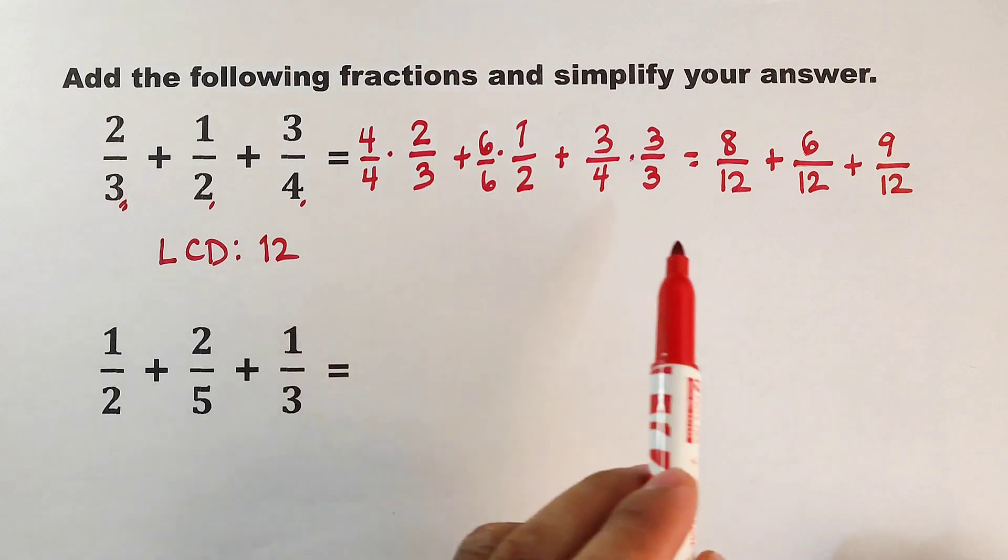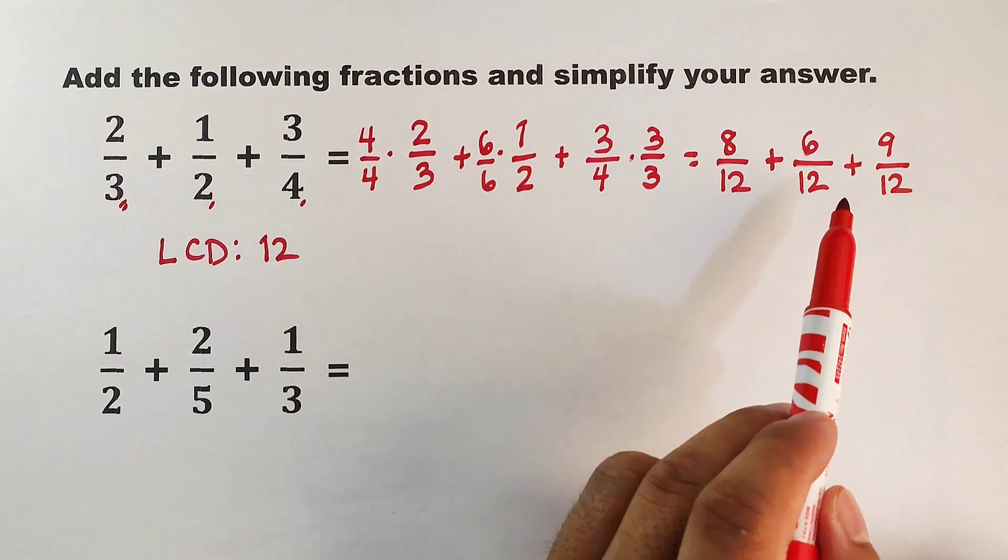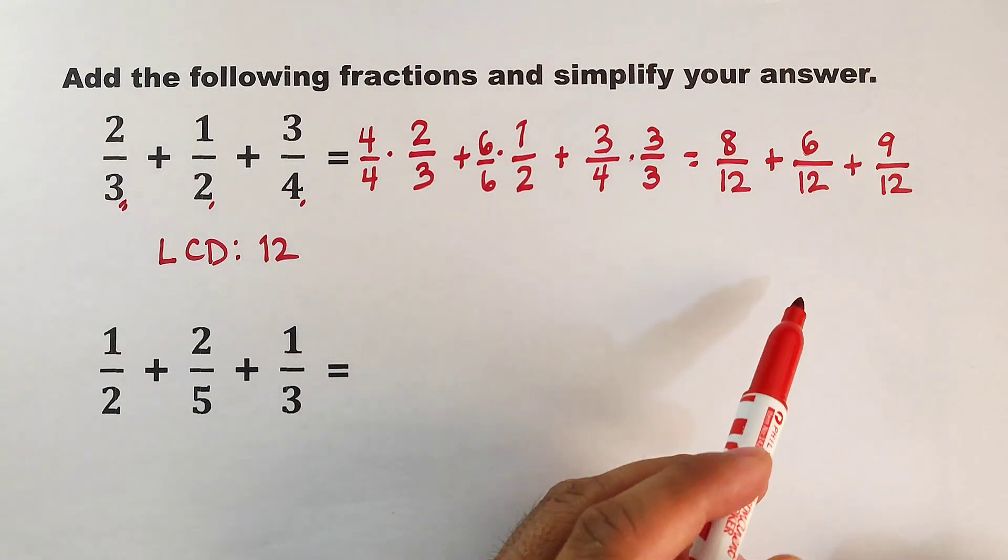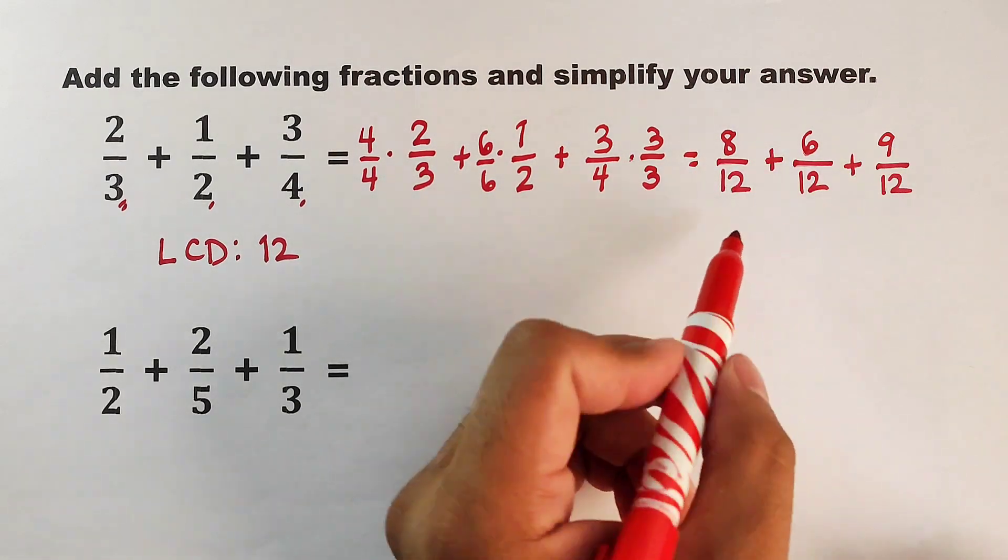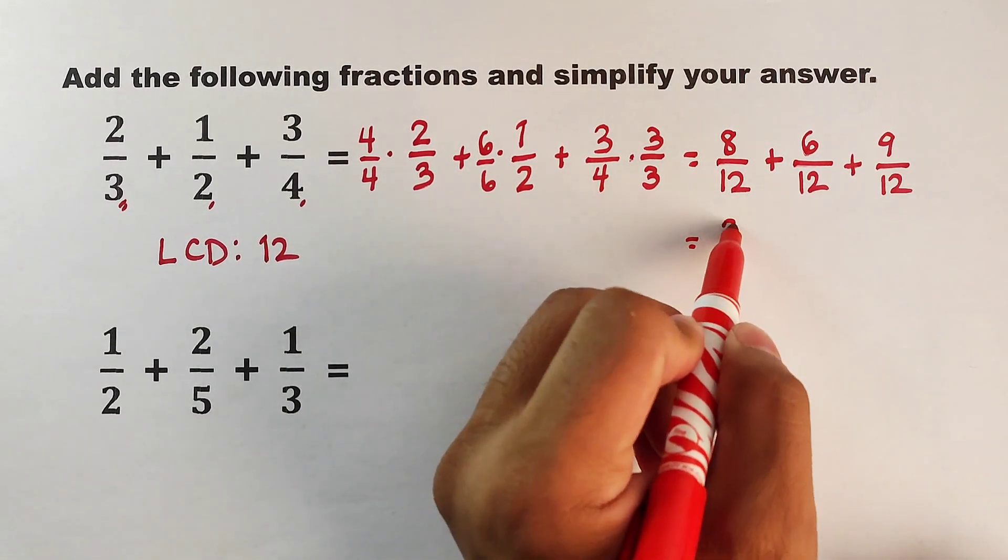And as you can see, right now we have the same denominators. All we need to do is to add the numerators. We have 6 plus 8, that is 14. Plus 9, that will become 23.